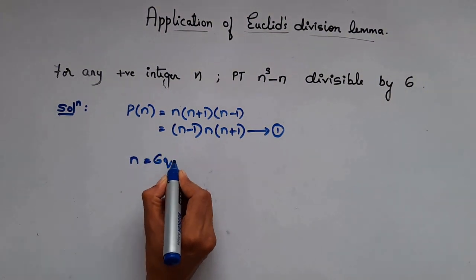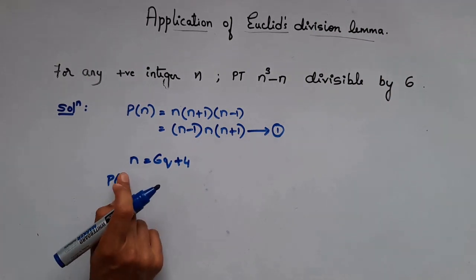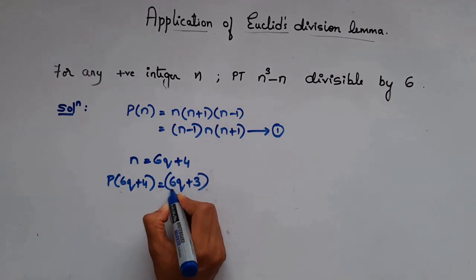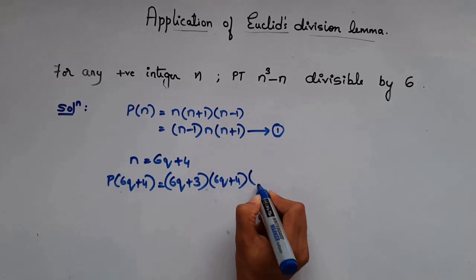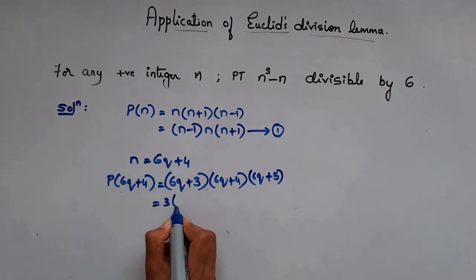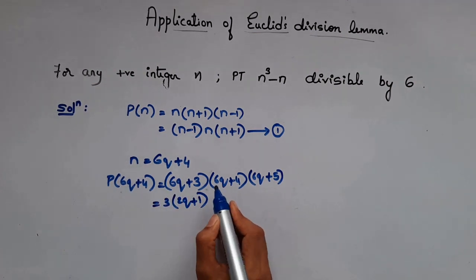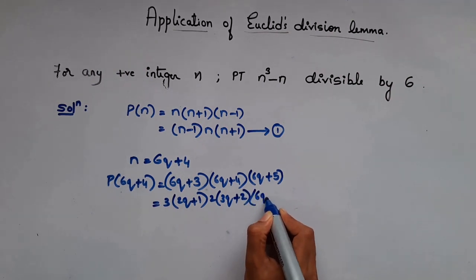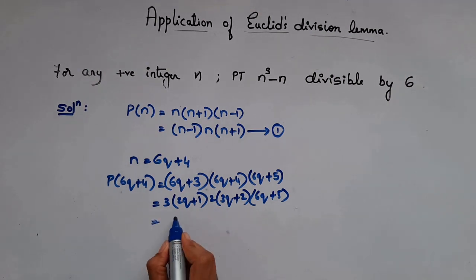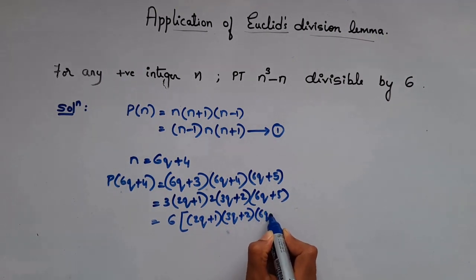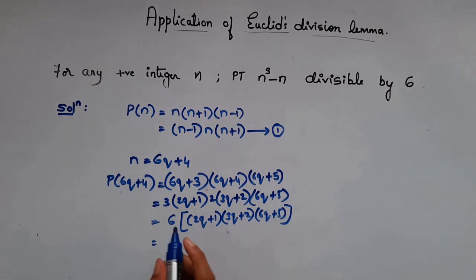Now when n = 6q + 4, P(6q+4) = (6q+3)·(6q+4)·(6q+5). Here 3 is common in (6q+3) and 2 is common in (6q+4), giving a combined factor of 6. Taking the remaining terms as m, this is 6m — a multiple of 6, hence divisible by 6.